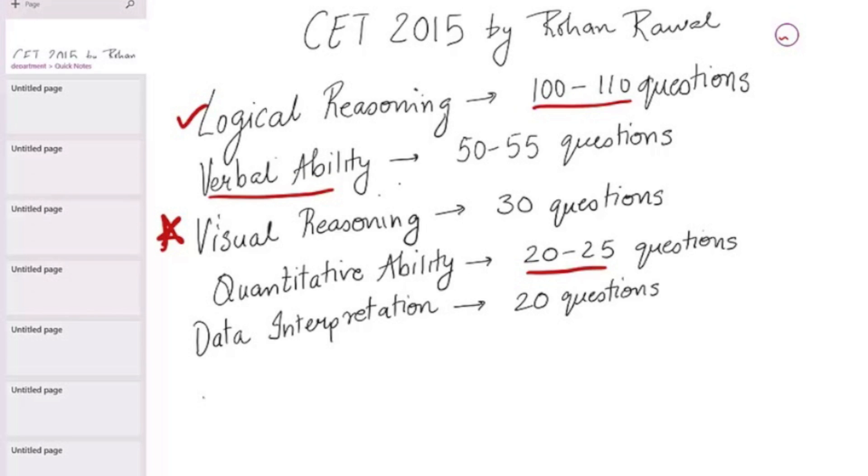So if you notice carefully, the first three sections will become the most crucial sections for you if you want to crack this exam. And the last two sections will also play an equally important role if you're looking for a dream college of yours, J.B. Amish.